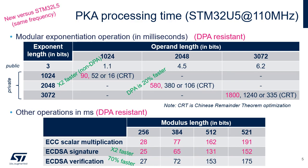Here are the modular exponentiation processing times using different exponent and operand sizes. Other important operations, like ECC scalar multiplication and ECDSA signature and verification, are also mentioned. Values are computed on an STM32U5 for a PKA clock of 110 MHz. Differences versus the STM32L5 PKA running at the same clock are highlighted.